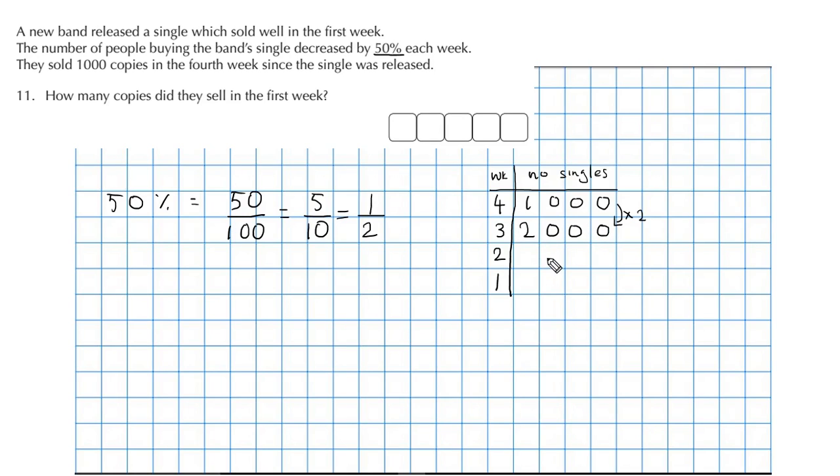Okay, and we'll do the same again. What they sold in week 3 was half of what they sold in week 2, so therefore to find out what they sold in week 2, that's going to be 4000 singles.